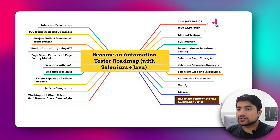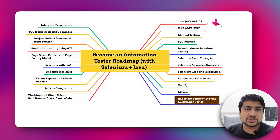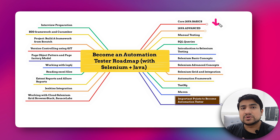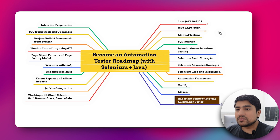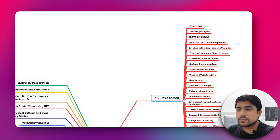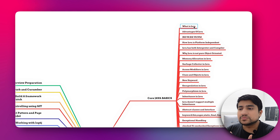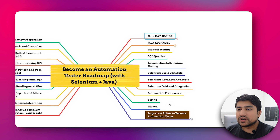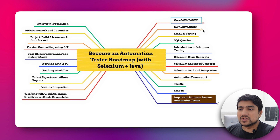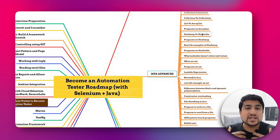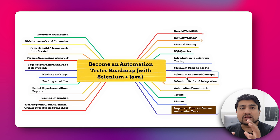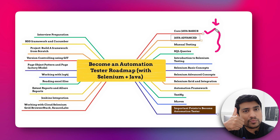We will start from Core Java first because it is really important. This automation roadmap focuses on Java, which is the most widely used programming language right now — out of 10 jobs, seven basically want Java. In Core Java, the topics include what Java is, the Java platform, memory allocation, and more. Similarly, in Java Advanced, we will learn about lambda expressions and newer features being introduced.